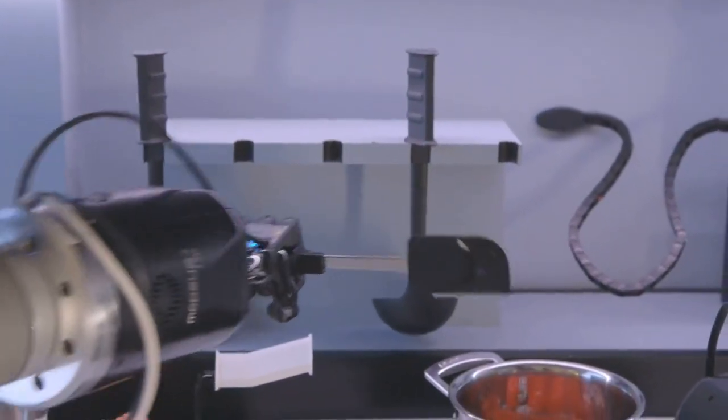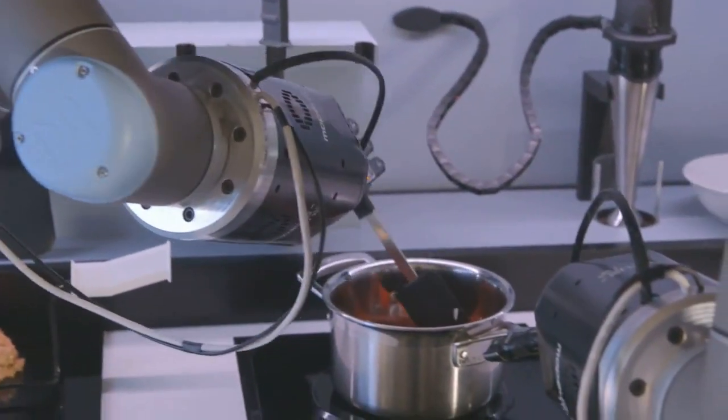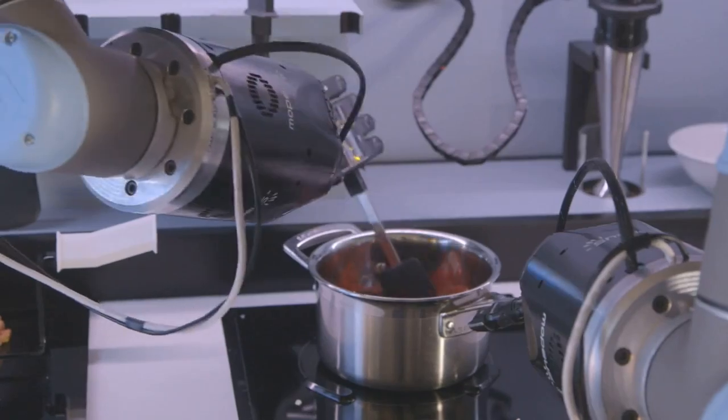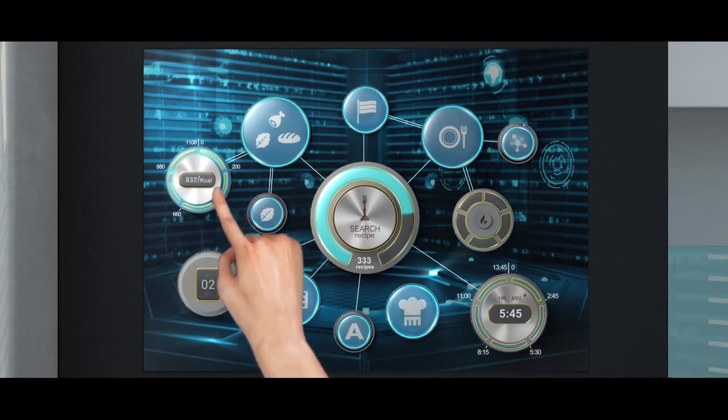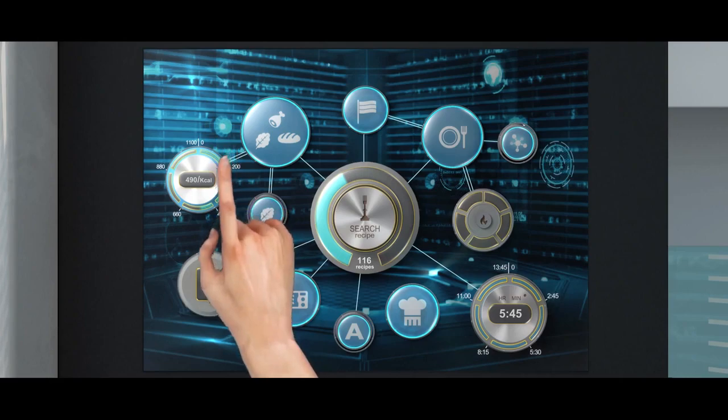The robot turns on the hob with a deft finger before picking up some butter taken from a group of pre-assembled ingredients. It melts the butter, adds shallots and seasoning and over the next 20 minutes or so produces an impressive bisque.